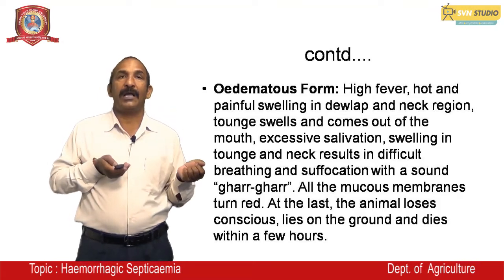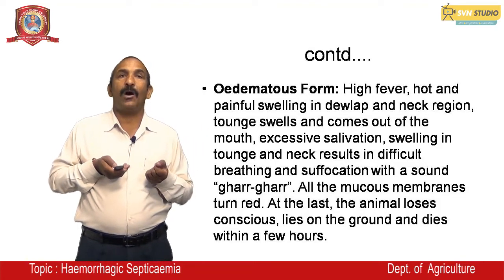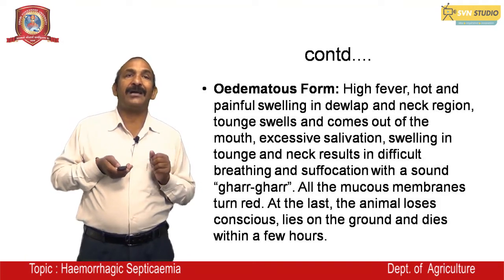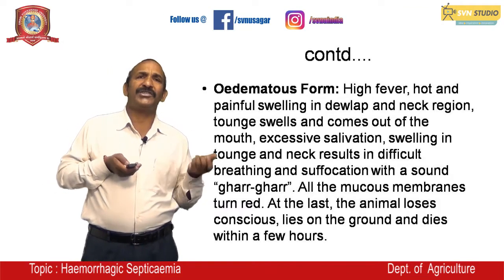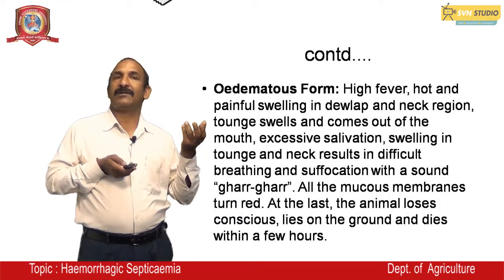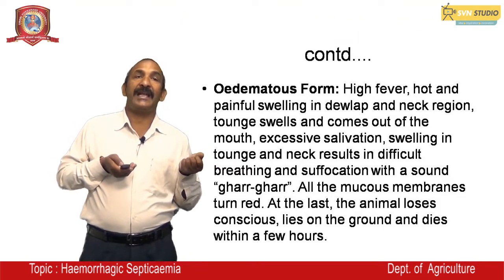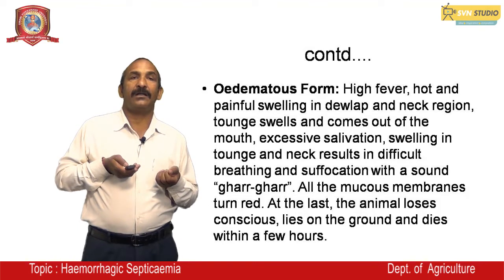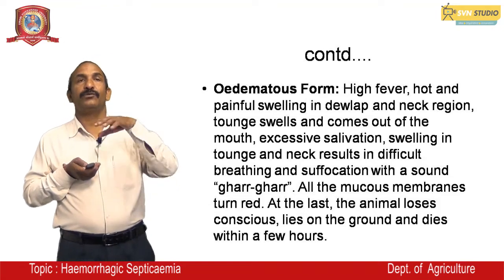In the oedematous form, swelling occurs in the throat and neck region, the tongue swells and comes out of the mouth, there is excessive salivation, and swelling in the tongue and neck results in difficult breathing and suffocation with a 'ghar ghar' sound. All mucous membranes turn red, and in the final stage the animal loses consciousness, lies on the ground, and dies within a few hours.